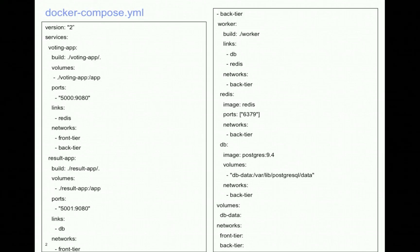Among the five services, for the Redis and the DB services it pulls the Redis and the Postgres image from Docker Hub and starts the containers. For the voting app, result app, and the worker services it builds new Docker images using the Dockerfiles available under the corresponding folders, starts the containers, and uses two different networks: front-tier and back-tier.